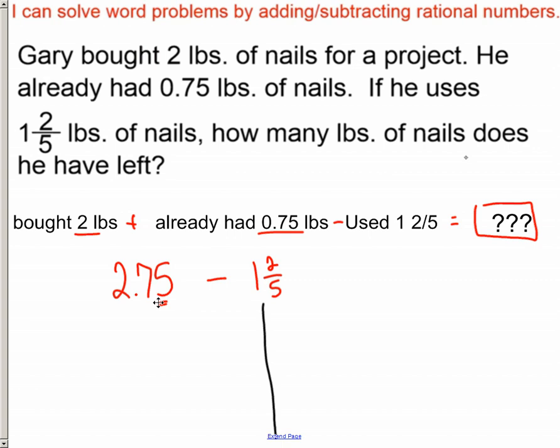This place value right here is the hundredths, so that means I would put 100 on the bottom of the fraction. 75 goes on top. On top of that, 75 one-hundredths simplifies down to 3/4, so that makes it a little easier.